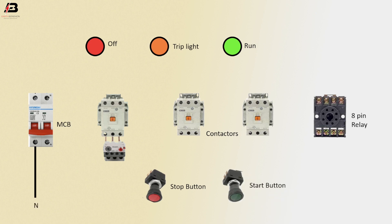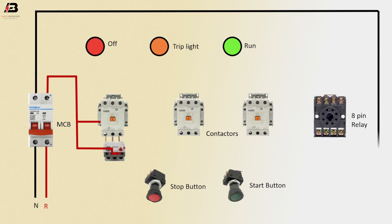Neutral connection to MCB input point. Phase connection to MCB input point. Phase connection outgoing from MCB and connect to overload relay and magnetic contactor NC point. Neutral connection outgoing from MCB and connect with relay neutral point. Neutral connection outgoing and connect the run indicator light. Also connect with trip light and off light.